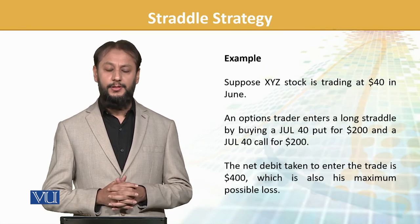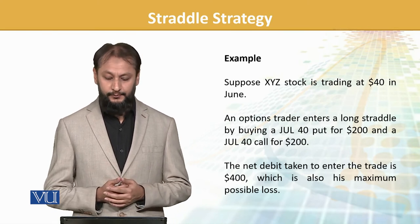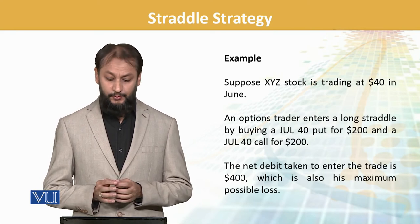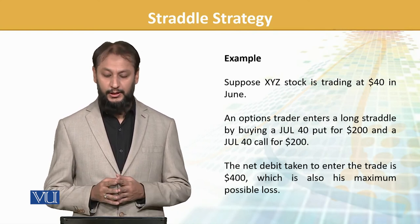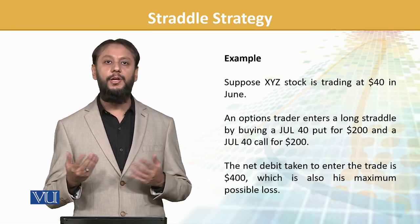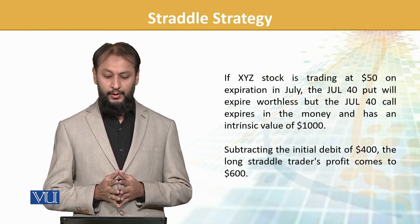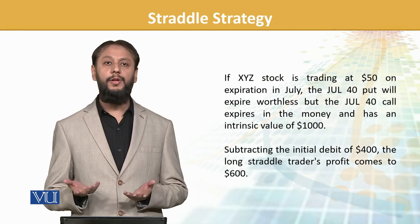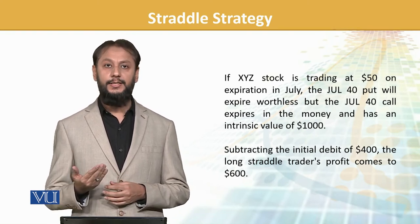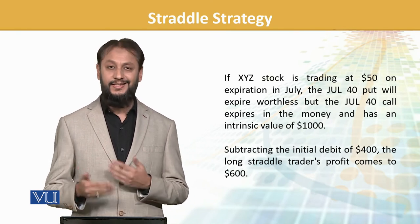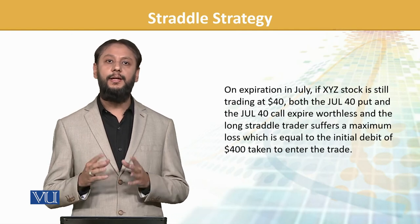Let's look at one more example for better understanding. Suppose XYZ is trading at $40. In a long straddle, we buy a $40 call option and a $40 put option, each with a premium of $200, making a total cost of $400 debited from our account. If the stock moves to $50, the put expires worthless since the price rose, but the call option becomes profitable — we gain $1,000. Subtracting our $400 outflow, we net a $600 gain. However, if the stock stays at $40, there is no gain and we lose the entire $400 premium — that is our loss.